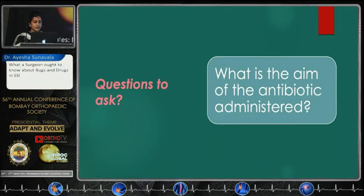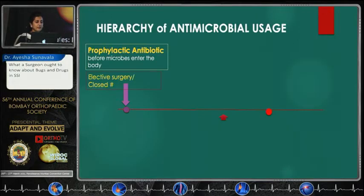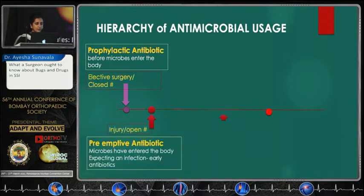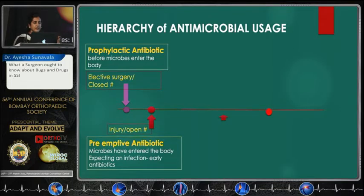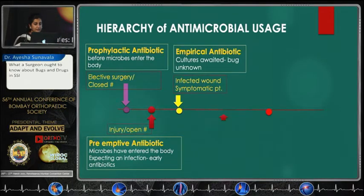Let's begin with the first question. We need to understand the hierarchy of antimicrobial usage. If you are using it for elective surgery for a closed fracture, you are using prophylactic antibiotics before the microbes enter the body. In an open fracture injury, you are using proactive antibiotics — here the microbes have already entered the sterile body compartment, and you are expecting an infection, so you give early antibiotics to prevent it.